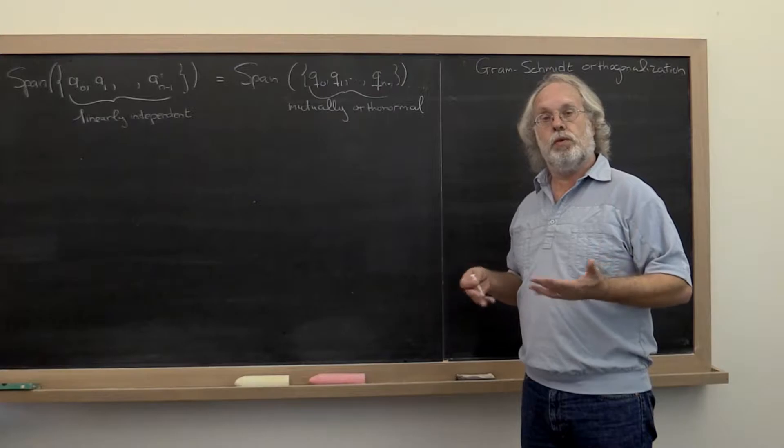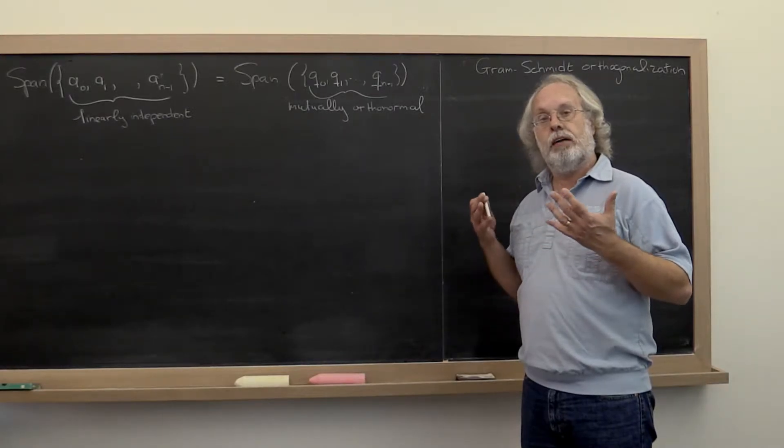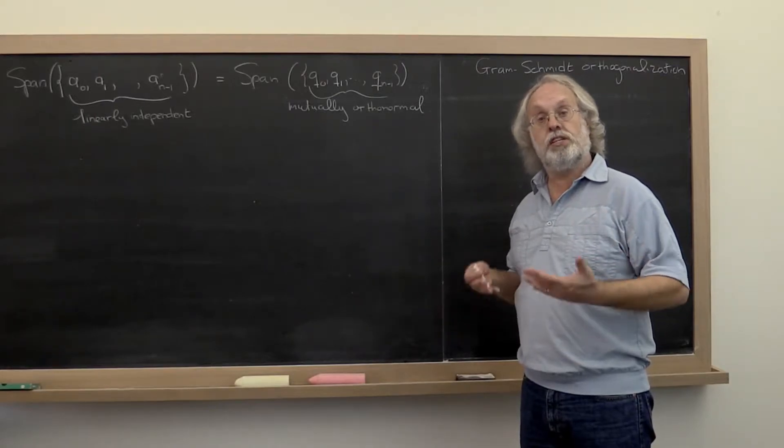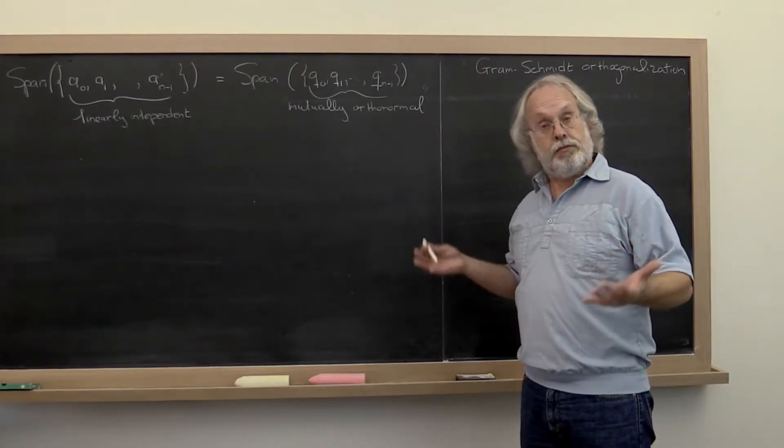Several times so far in this course we've talked about how having a set of vectors or a set of columns of the matrix that are mutually orthonormal has certain advantages.